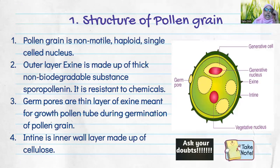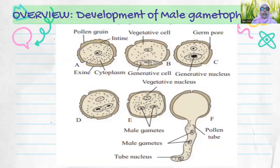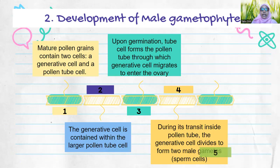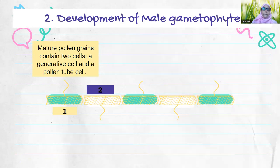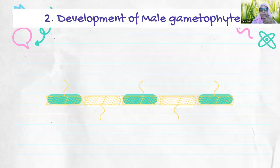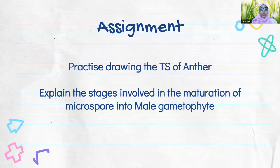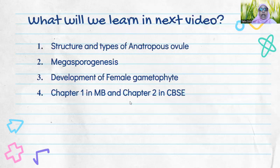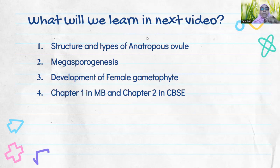Mostly pollen grains are released at the pollen tube stage, but there are many cases when pollen grains are still not developed into the pollen tube when released from the anther. So the developmental pattern differs depending on which plant species the pollen grains are from. That's all about the development of the male gametophyte. In today's class we discussed the structure of the pollen grain and the development of the male gametophyte. Your assignment: practice drawing the cross-section of the anther and write a short note on the stages involved in the maturation of the microspore into the male gametophyte. In the next video we will cover the structure of the ovule and then how fertilization and reproduction takes place.